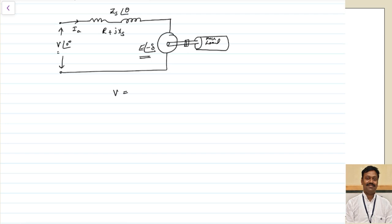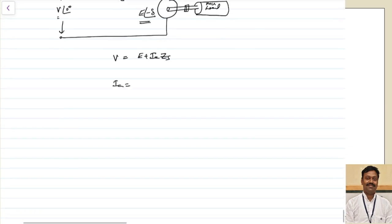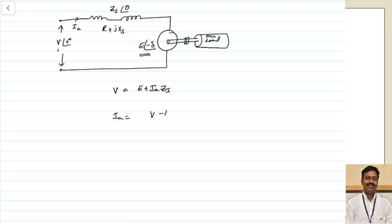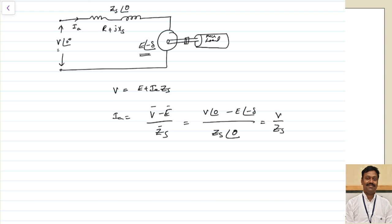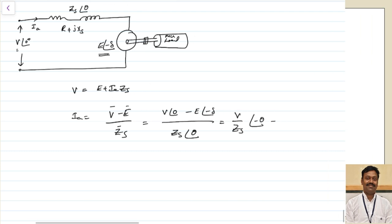We can write V = E + Ia·Zs, so Ia = (V − E) / Zs. In phasor form this becomes: Ia = [V∠0° − E∠−δ] / Zs∠θ, which gives Ia = (V/Zs)∠−θ − (E/Zs)∠(−θ − δ), where theta is the impedance angle.